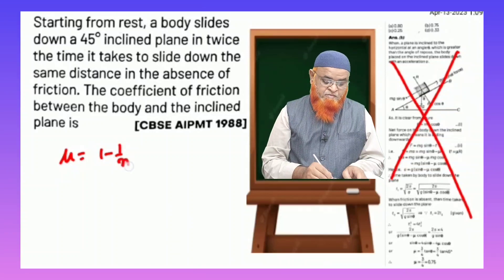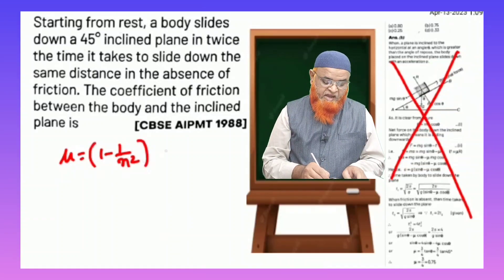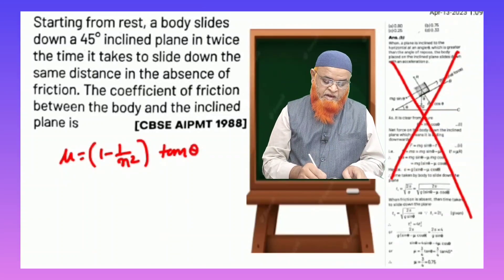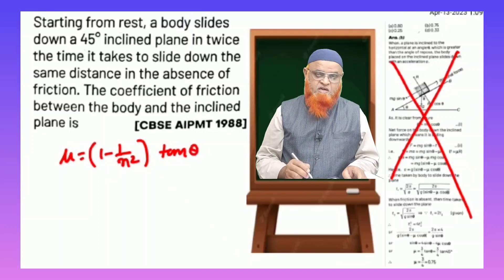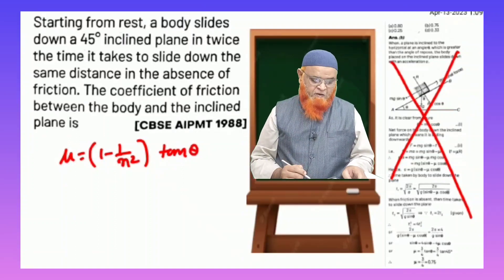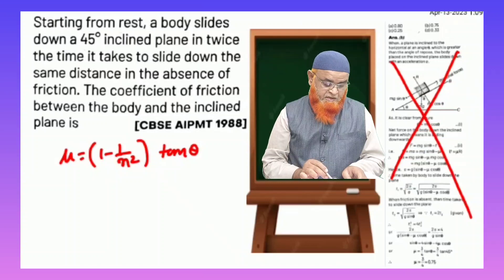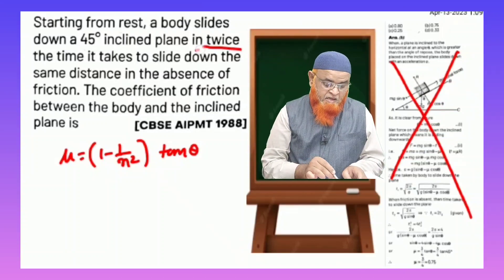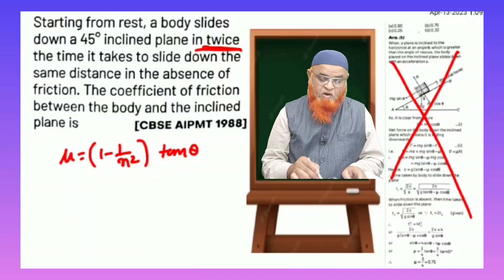Coefficient of friction μ is equal to 1 minus 1 by n square into tan θ. This is going to be your shortcut formula. You can see here the coefficient of friction between them twice. What is this word twice means?